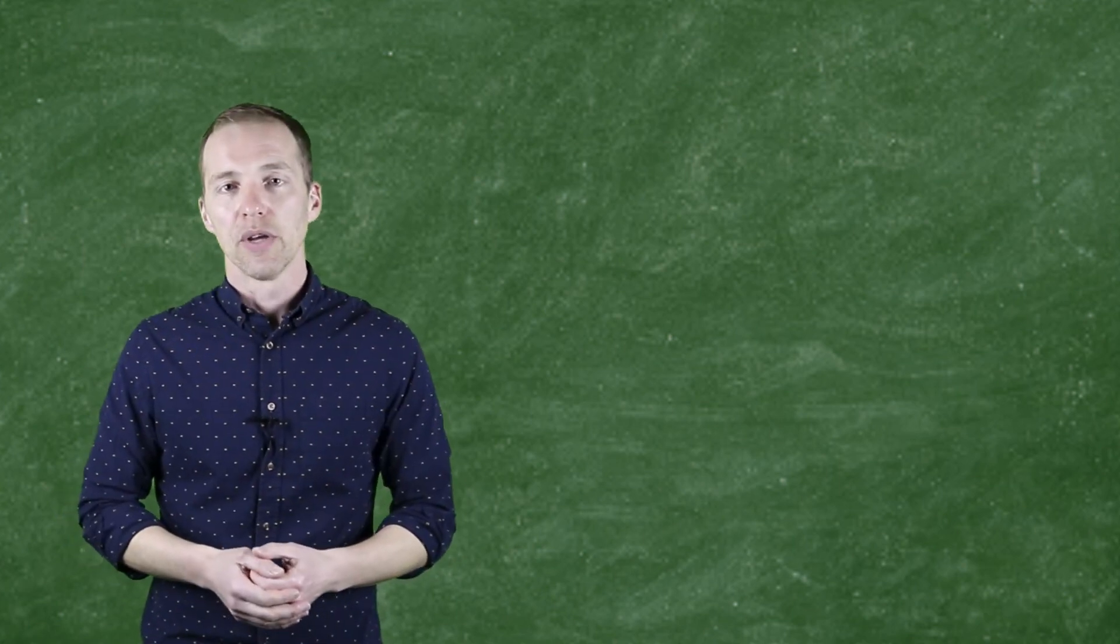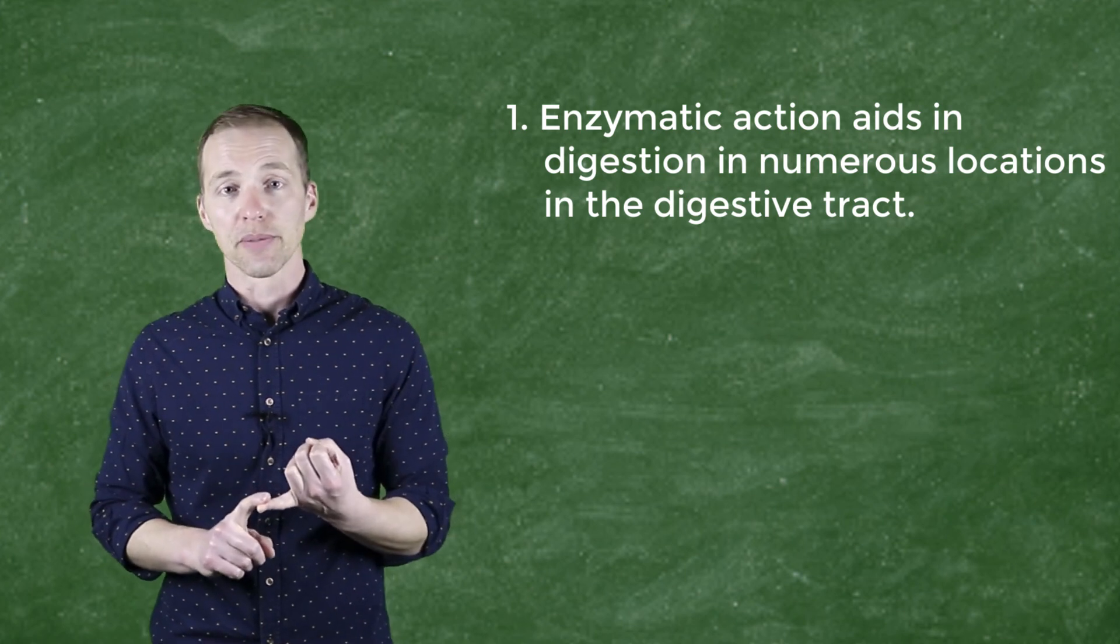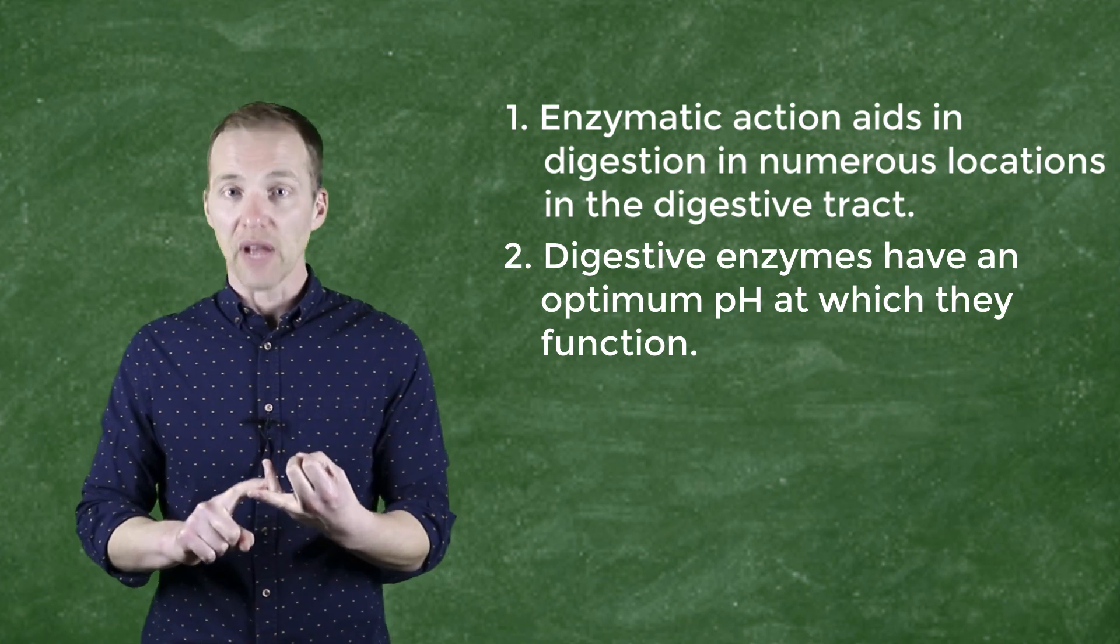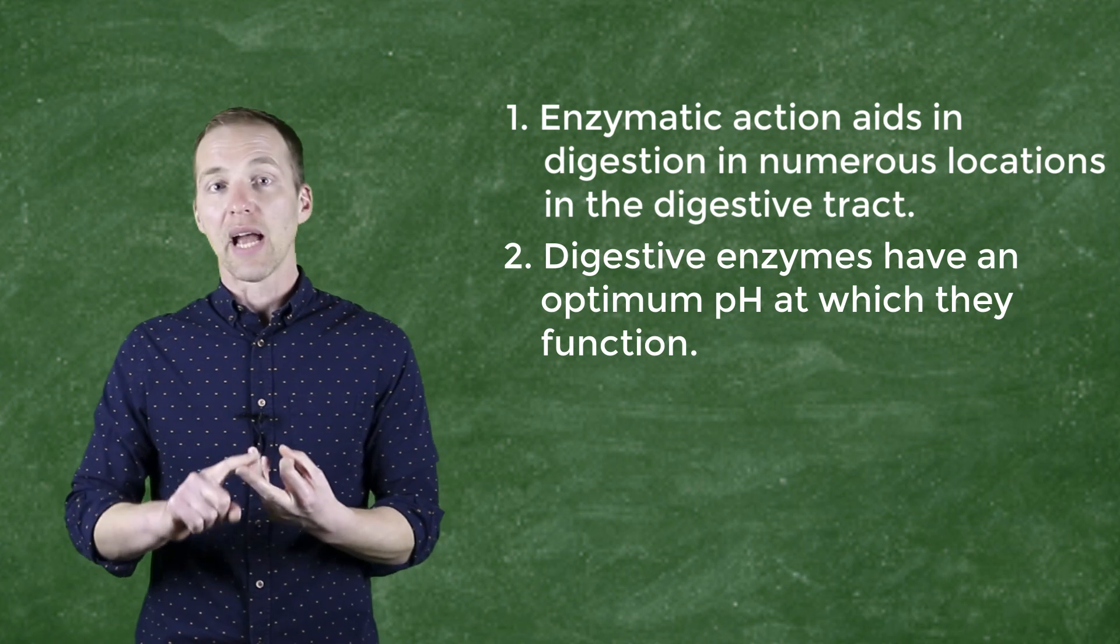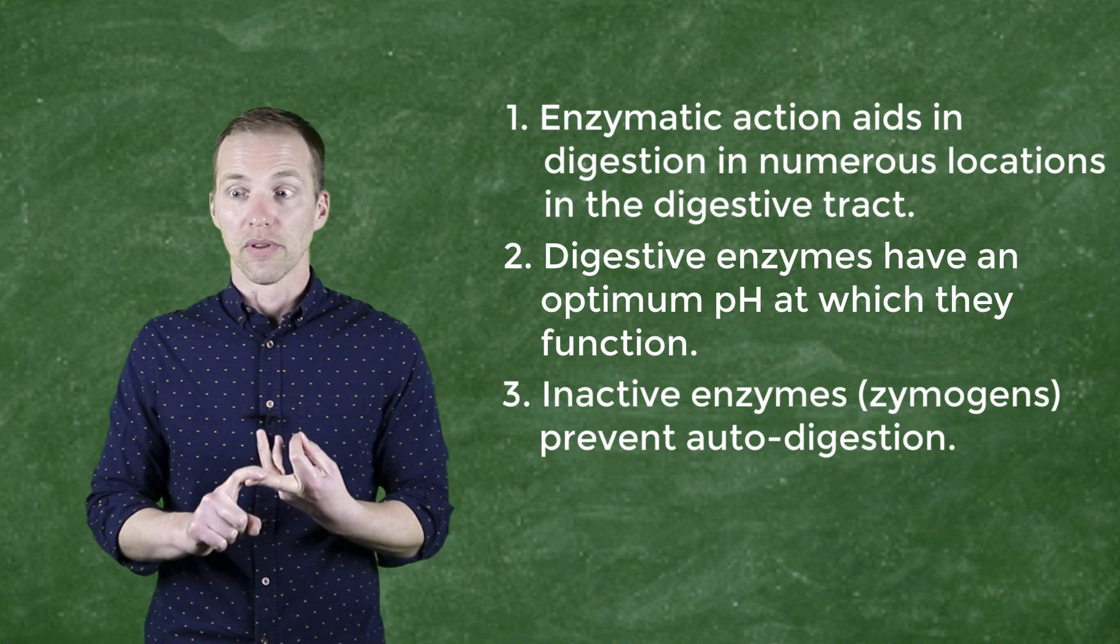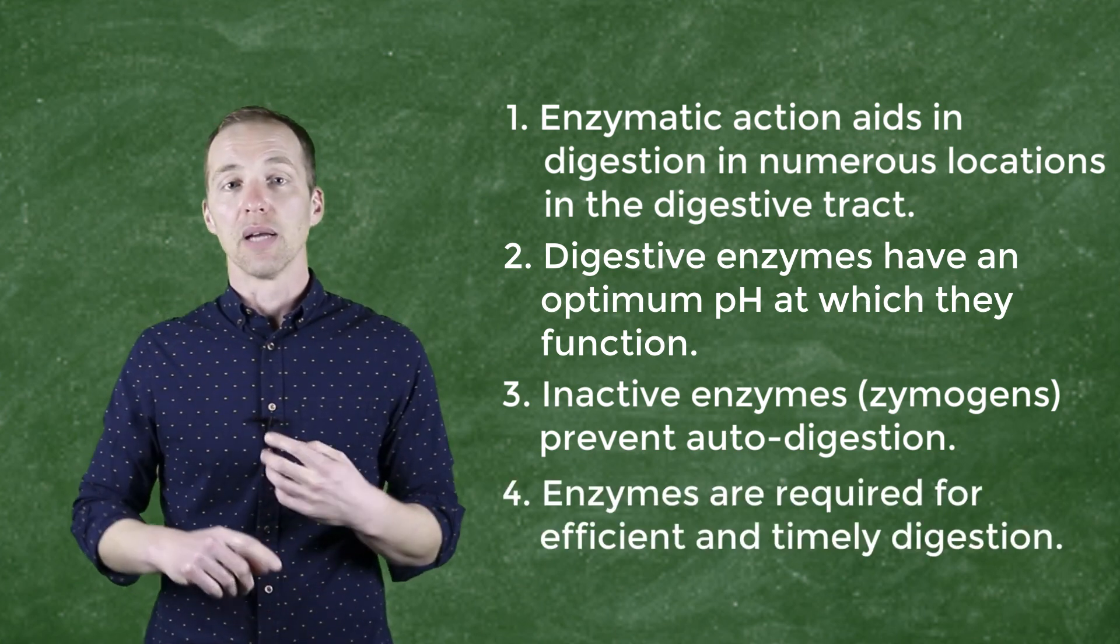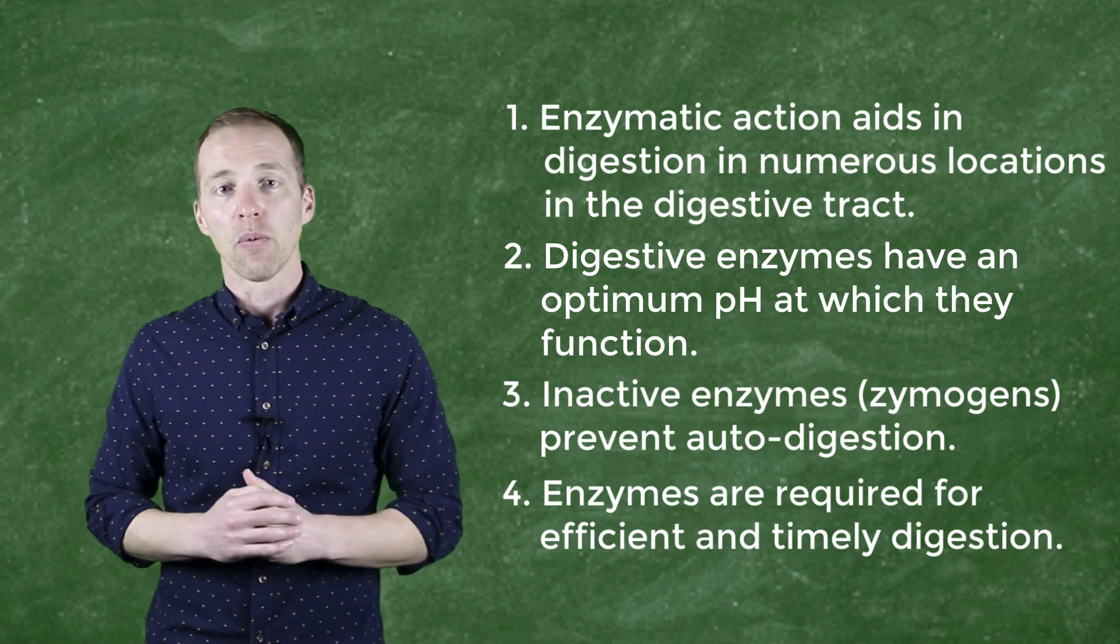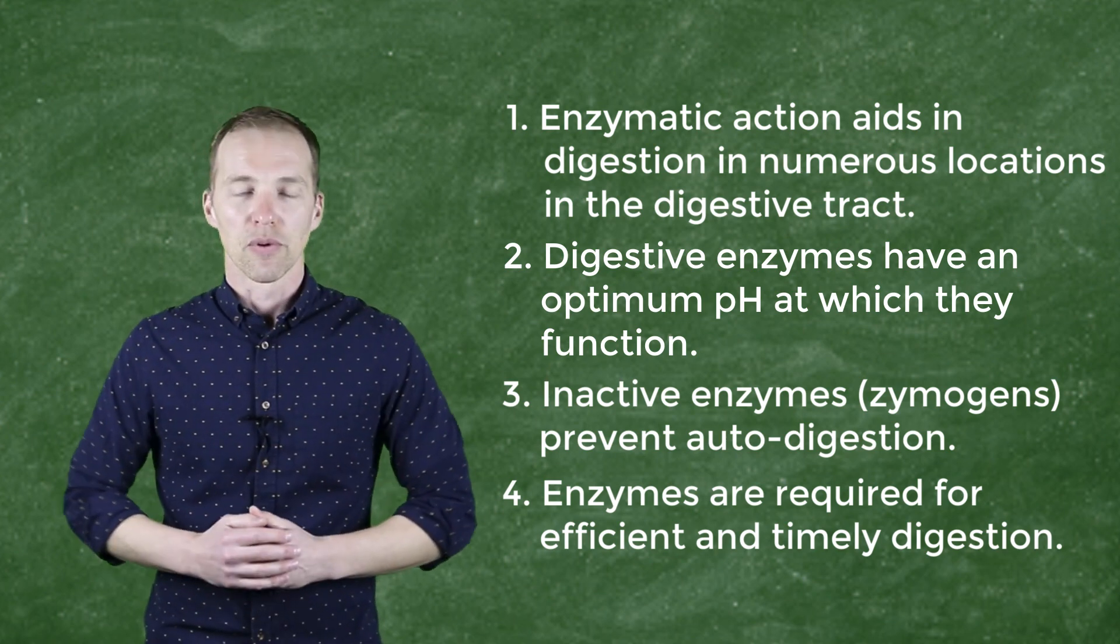So my hope is after watching this video, you have a better understanding of the locations of where enzymatic action occurs in the digestive system. You understand that enzymes require certain environments in order for them to work effectively, and that some environments will actually shut down the action of enzymes, that the body actually has some defense mechanisms in order to prevent autodigestion or the body effectively eating itself, and that you appreciate without the action of enzymes, that this whole digestive process would take a whole heck of a lot longer than it does now. So the next time you're eating, I want you to thank an enzyme for me, Mr. Key, and right now I'll thank you for watching.